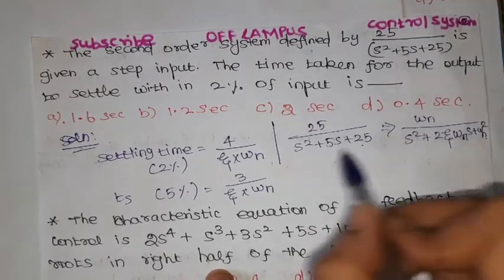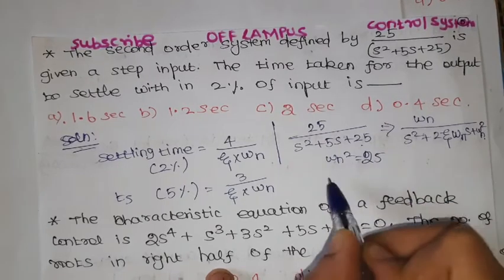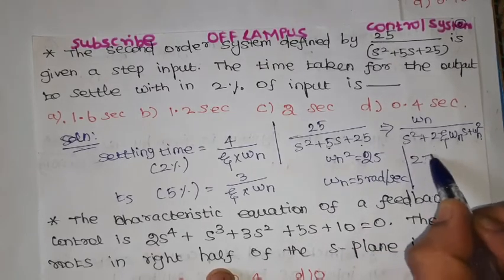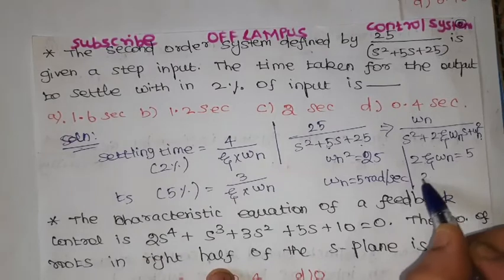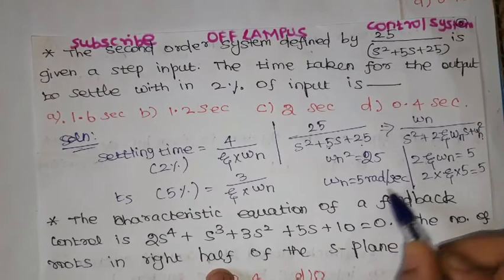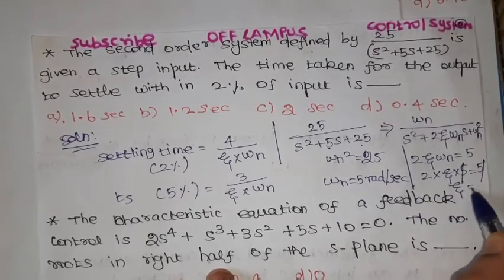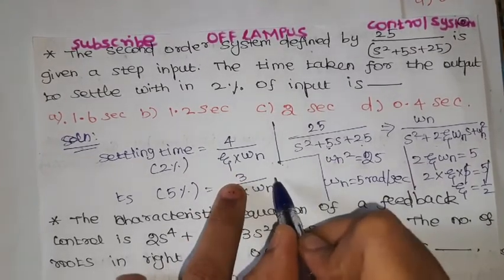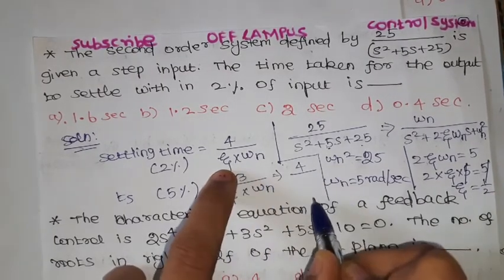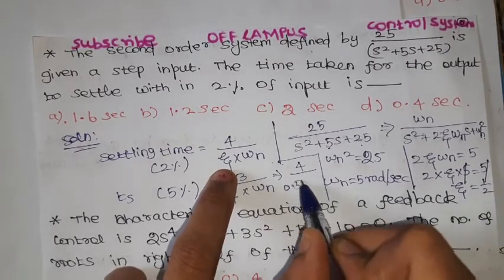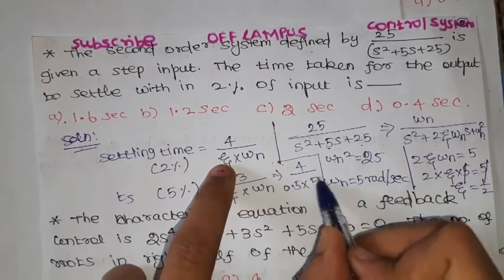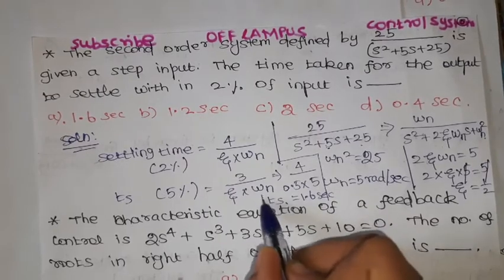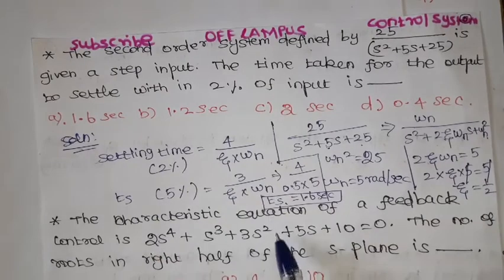Omega_n squared equals 25, so omega_n equals 5 radians per second. Next, comparing the s-term: 2·zeta·omega_n equals 5. Substituting omega_n = 5: 2 × zeta × 5 = 5, so the 5s cancel and zeta equals 1/2, which is 0.5. Now substituting into the settling time formula: settling time = 4 divided by (0.5 × 5), which gives 1.6 seconds.